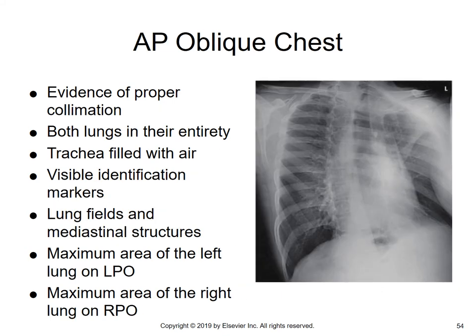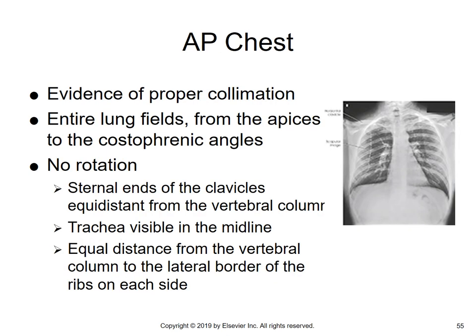For AP obliques, proper collimation, both lungs should be seen, trachea filled with air, and visible identification markers. Maximum area of the left lung is seen on the LPO — turn LPO, left side against the wall, the spine moves to the right, so you see the maximum area of the left lung. Do RPO and the spine moves to the left, so you see more of the right side. Maximum area of left lung on LPO, maximum area of right lung on RPO — this must be memorized.